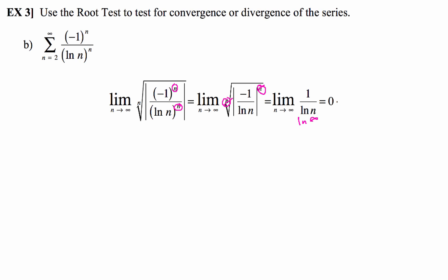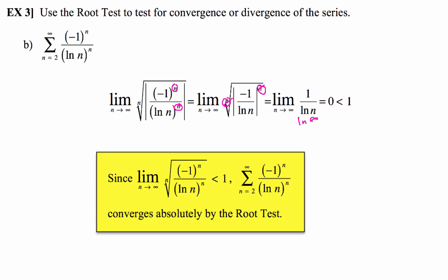of course, that is going to go to 0. Now 0, of course, is less than 1, and if we found the limit to be less than 1, then that means our series is going to converge absolutely by the root test.